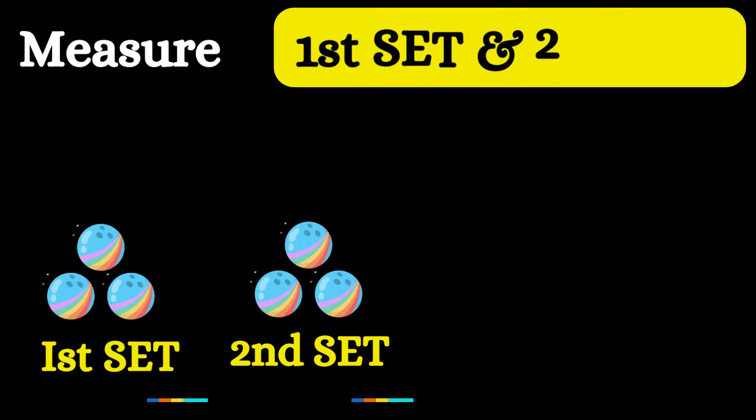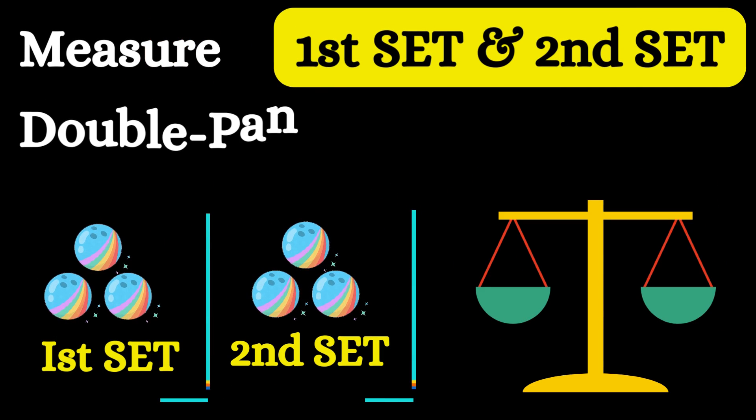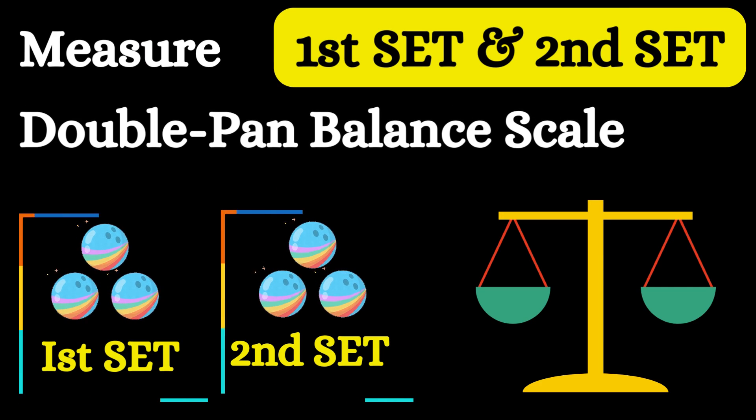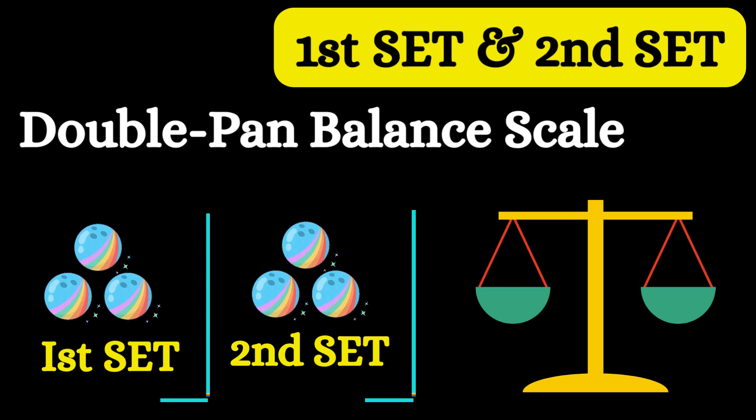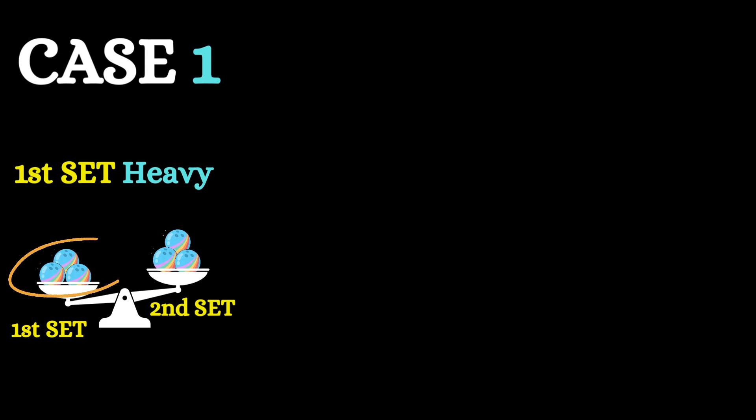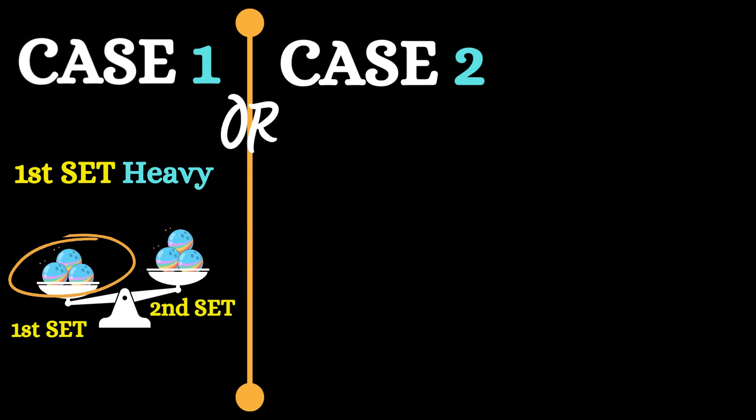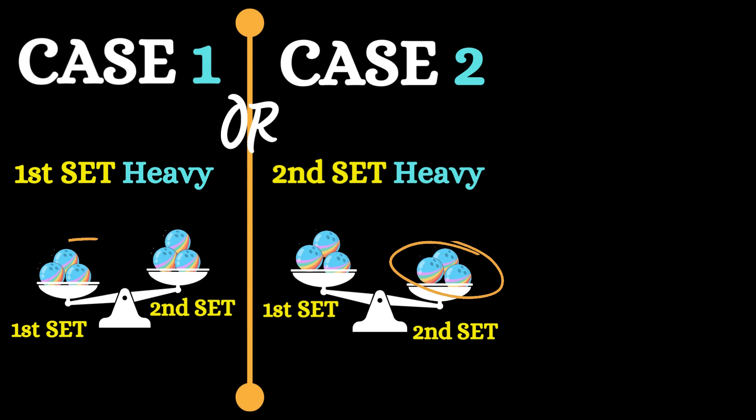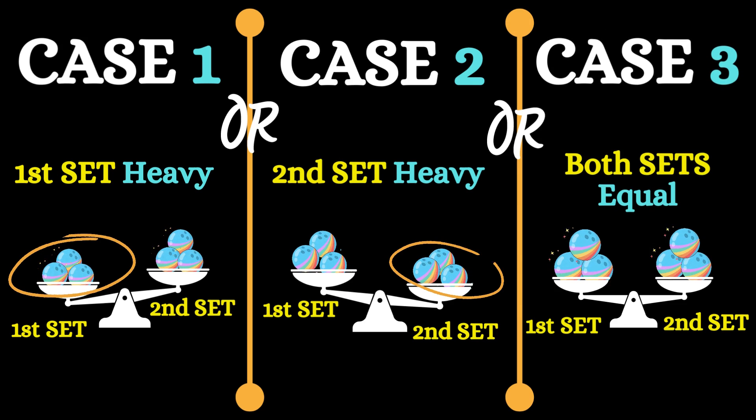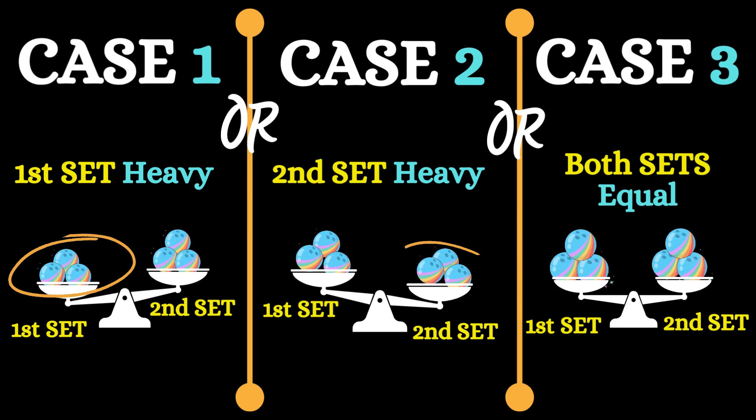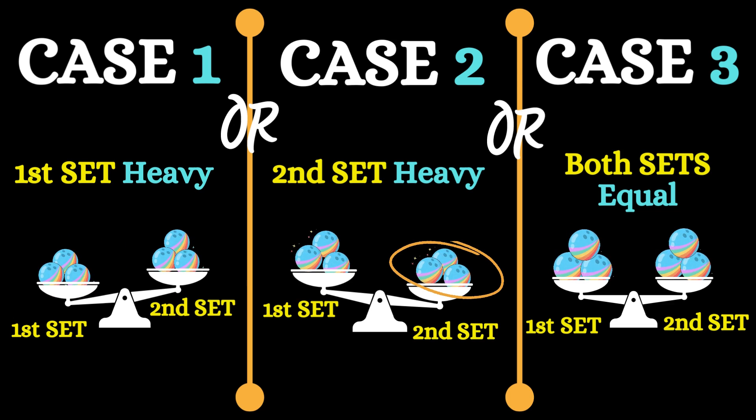Measure the first set and the second set in the double pan balance. When we measure them, there will be three cases. Case one: first set is heavy. Case two: second set may be heavy. Case three: both sets are of equal weight. Here, please note down which set is heavy.